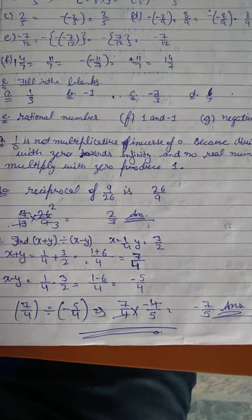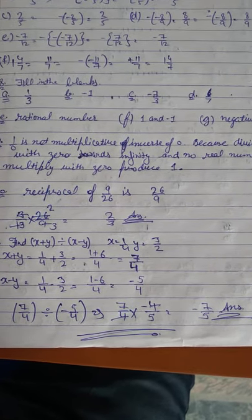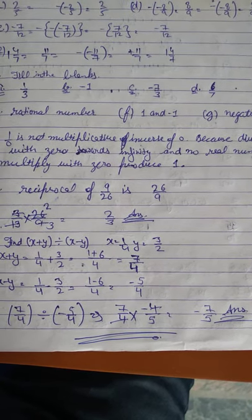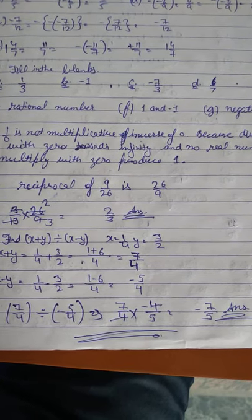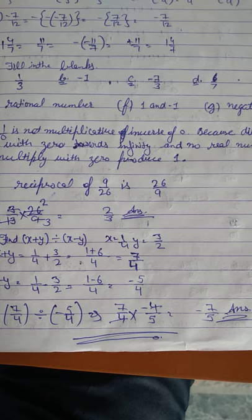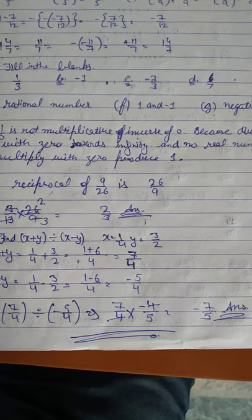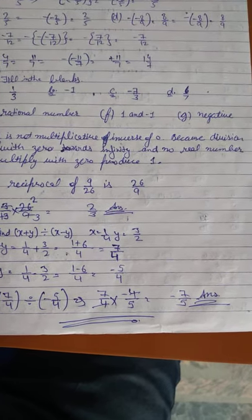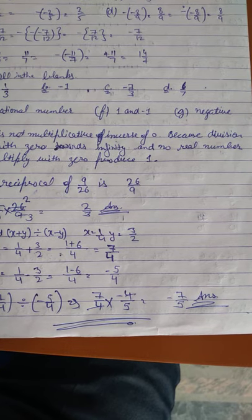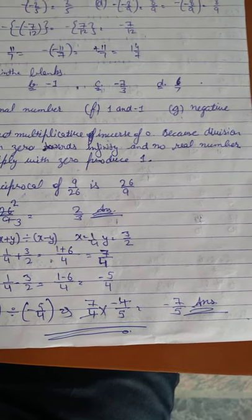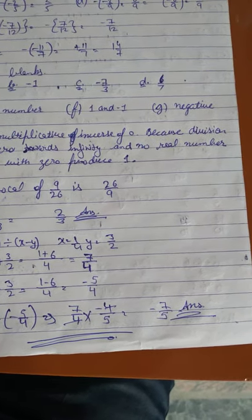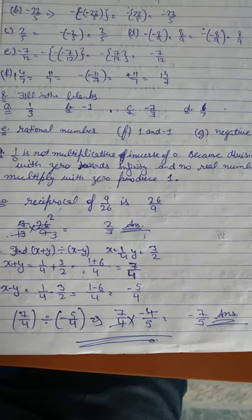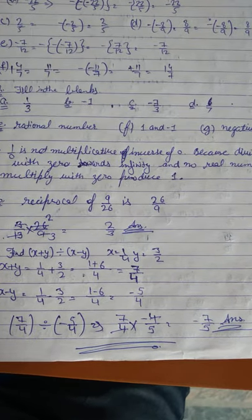In the ninth sum: is 1 over 0 the multiplicative inverse of zero? No, 1 over 0 is not a multiplicative inverse of zero, because division by zero tends to infinity — it is undefined, and no real number multiplied with zero produces 1.